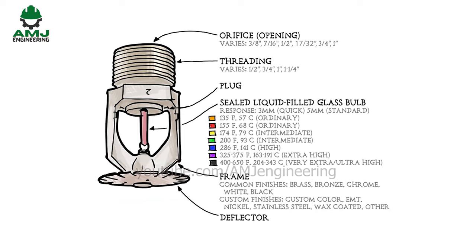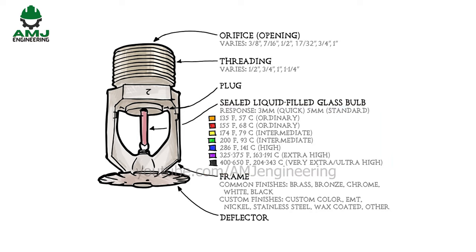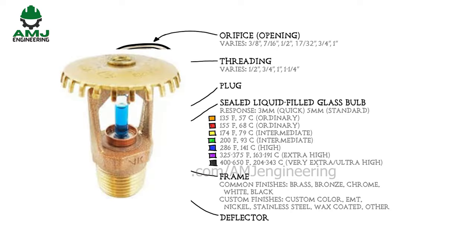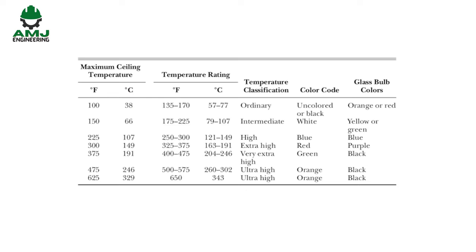The sprinkler's temperature rating is the temperature at which the sprinkler will activate. Options range from 135 to 650 degrees Fahrenheit. These ratings can be identified by the color of the liquid inside the bulb in the case of glass bulb sprinklers. The selection is taken from NFPA 13 Table 7.2.4.1 based on the hazard class for the structure that the fire sprinkler system is protecting.